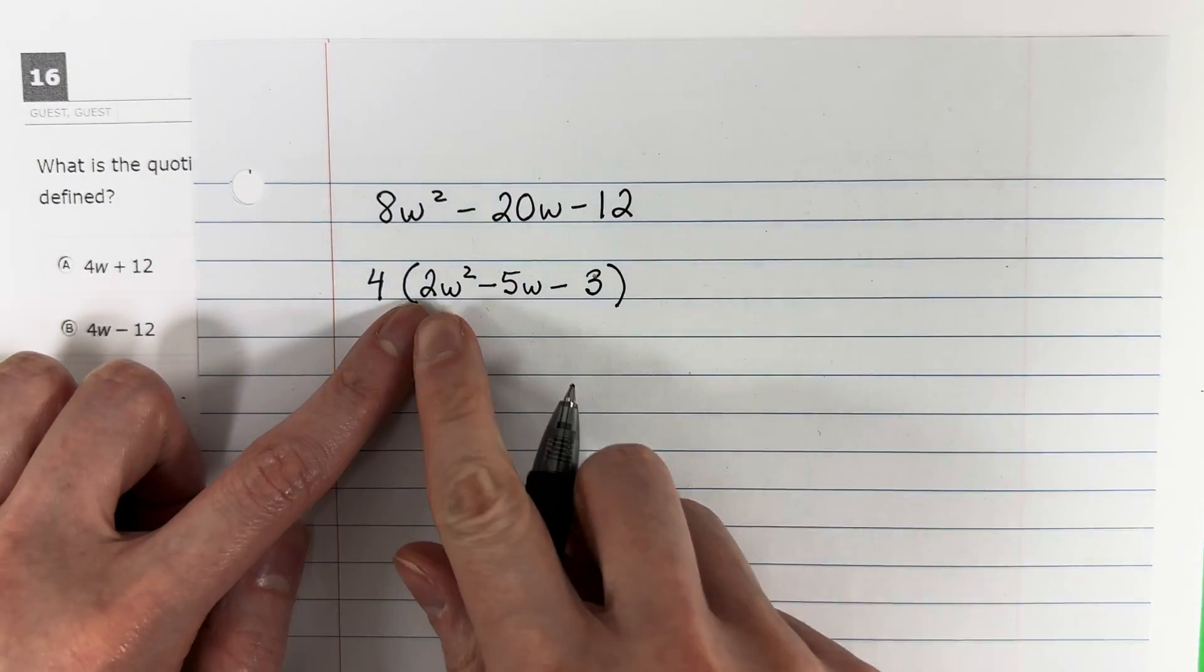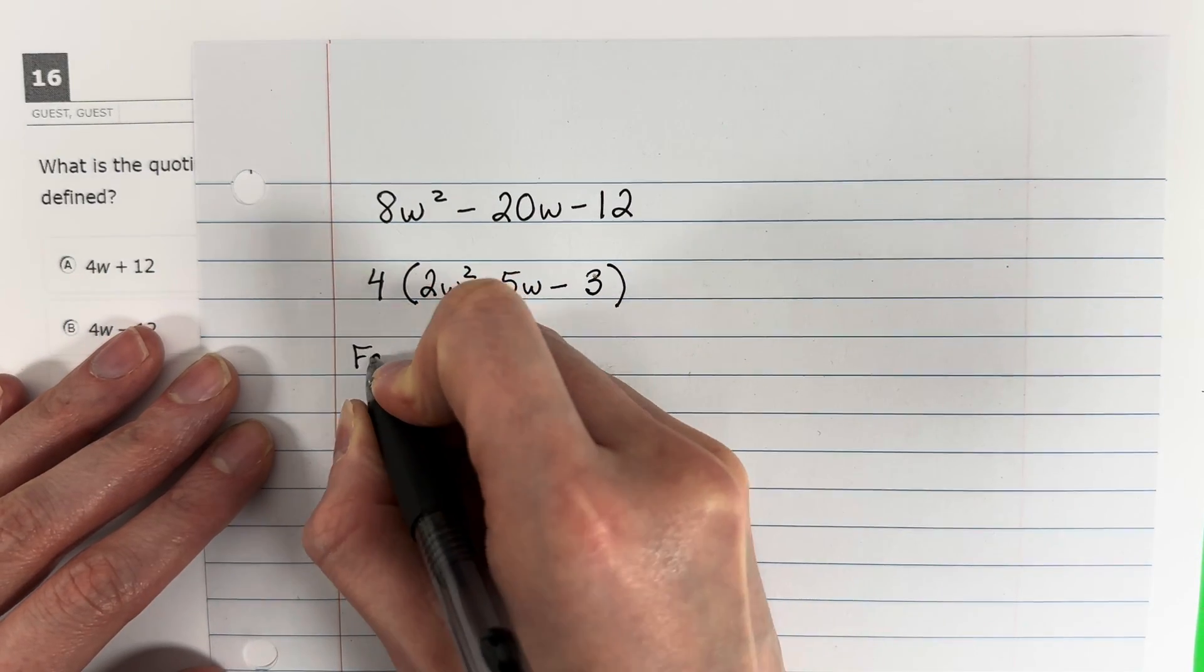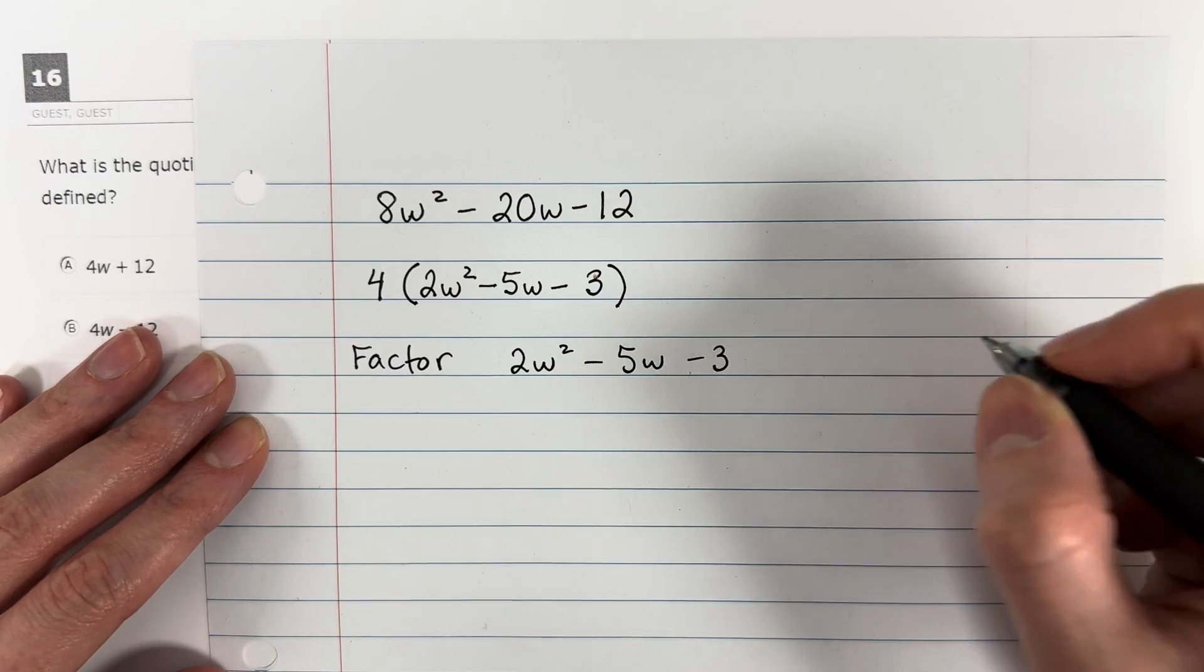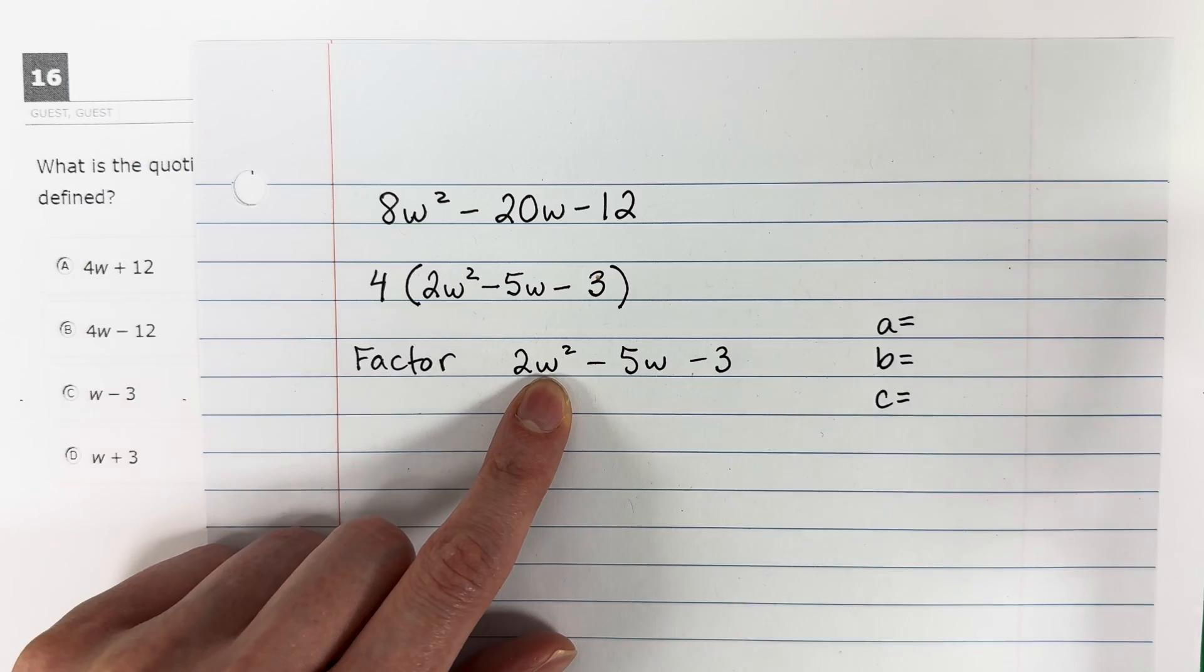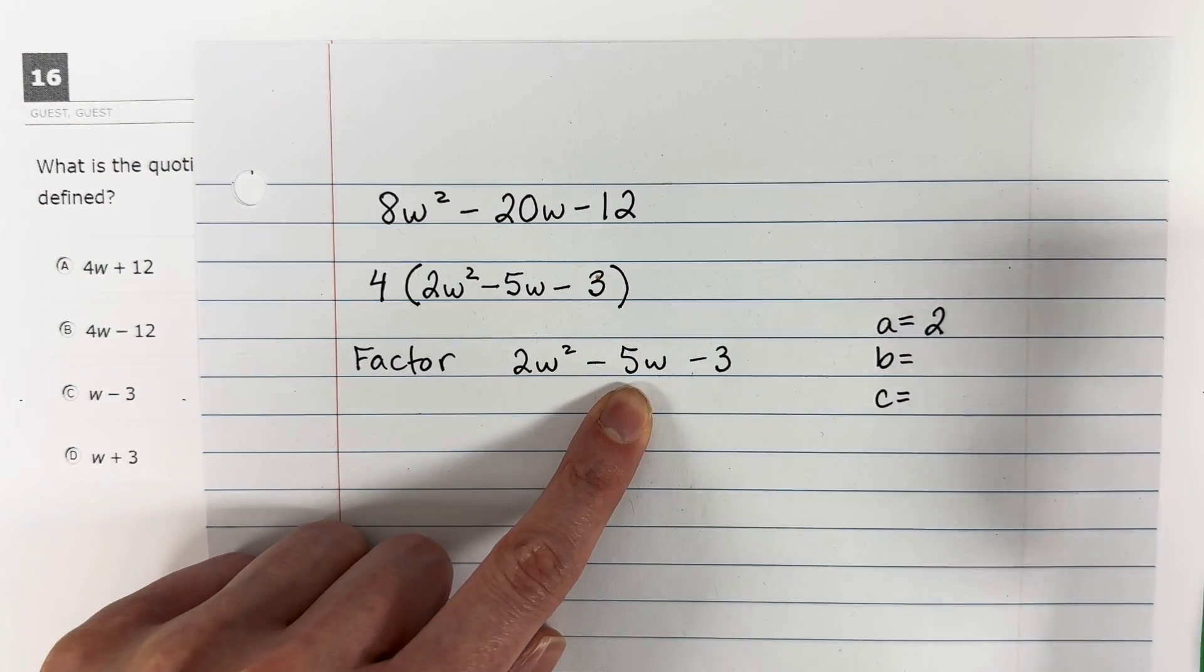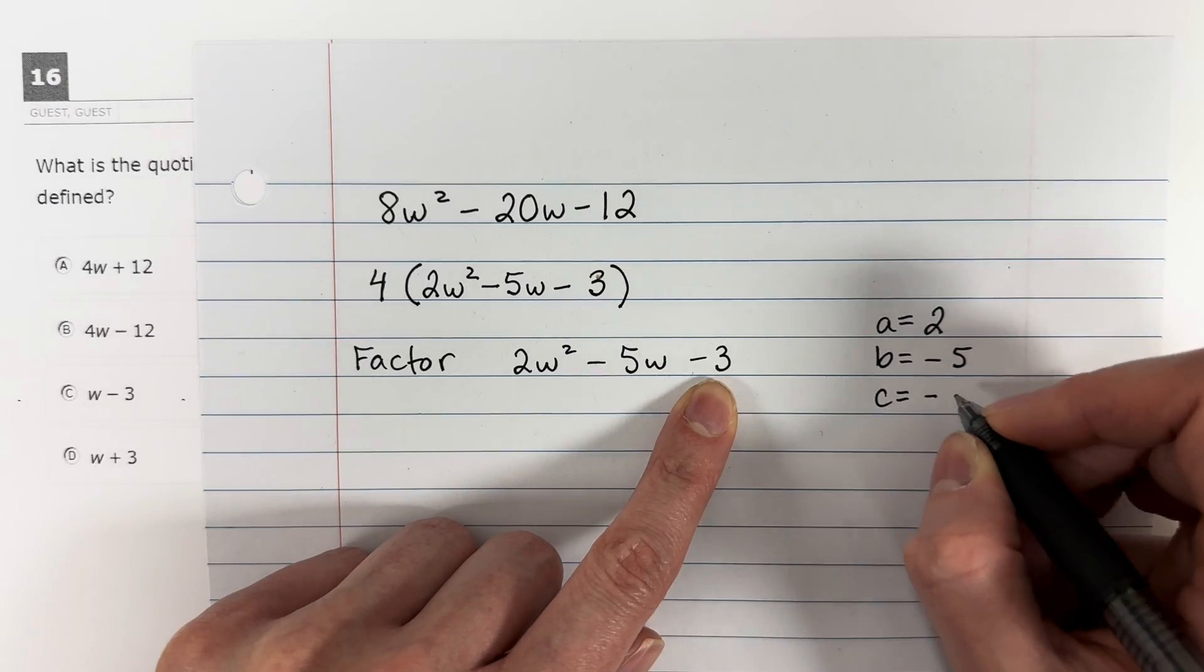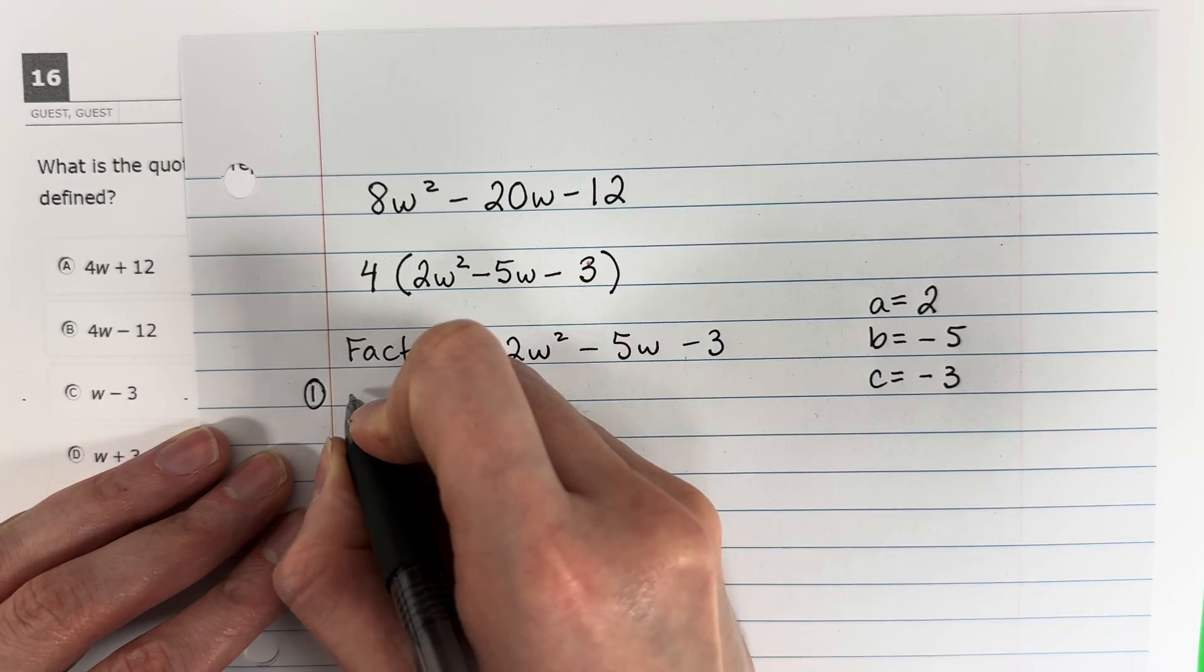So now I'm going to go ahead and factor this. Factor 2w squared minus 5w minus 3. So we're going to go ahead and do our ABCs. A is the number with the letter squared, so that's 2. B is the number with the letter, no exponent, that's negative 5. C is the number with no letter, no variable, that's negative 3. The first thing you're going to do to factor this is A times C.